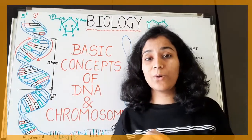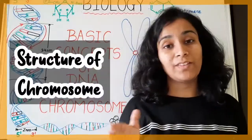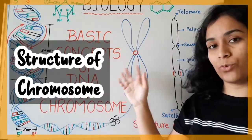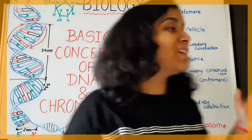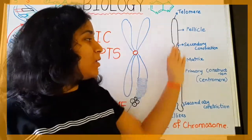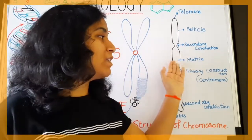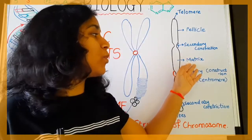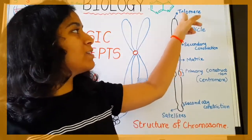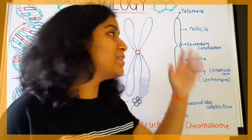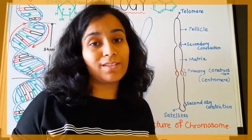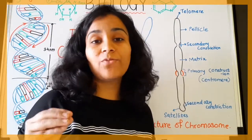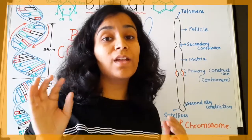Now let's look at the actual structure of the chromosome. The chromosome has arms. If we zoom inside one arm, you can see the covering of the chromosome is known as the pellicle, and the inside material — the cytoplasm-like matrix — is known as the chromosomal matrix. The end of the chromosome is known as the telomere, whose function is to prevent the sticking of the chromosome ends. There is also a secondary constriction.